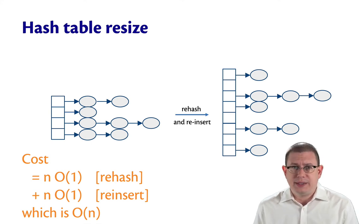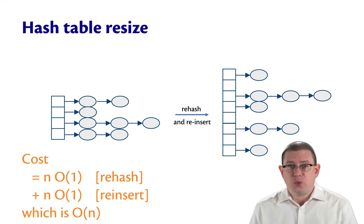Well, there were n bindings. That means there's n keys to rehash. We've assumed the hash function is constant time. So, that's order n work just to rehash all the keys. Then, we have to reinsert each binding. Well, that's n more insertions into this new bucket array. That's going to be order n work as well.